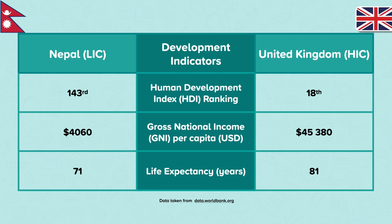This table compares Nepal on the left to the United Kingdom on the right. For example, this data shows us that Nepal has a Human Development Index ranking, according to the World Bank, of 143rd in the world compared to the UK's 18th. This evidence together suggests to us that Nepal is a Lower Income Country, or LIC.